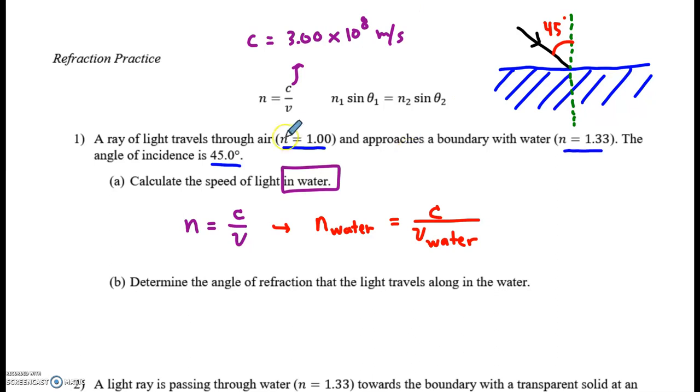Because we've got two values of N. Which one do we use? If you want the speed in water, you better use the refractive index of water, the 1.33.